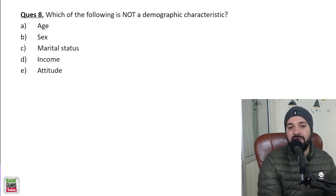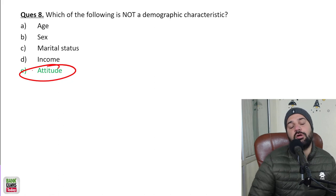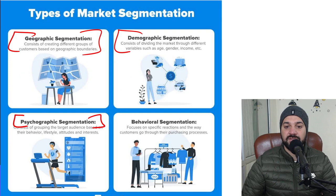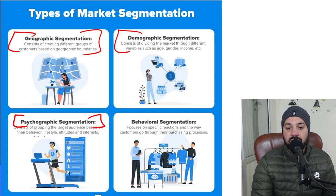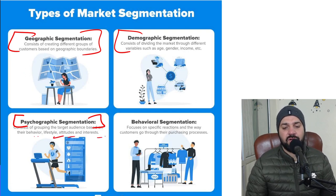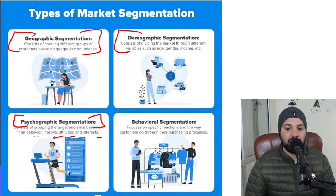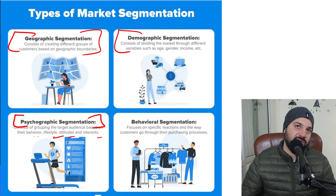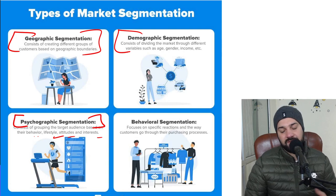Which of the following is NOT a demographic characteristic? Age, sex, marital status, and income are all demographic. Attitude is NOT demographic — attitude is a psychographic characteristic. Psychographic segmentation covers lifestyle, attitude, and interests. Behavioral segmentation covers your habits — for example, buying one liter of Verka milk of a certain fat content every day.